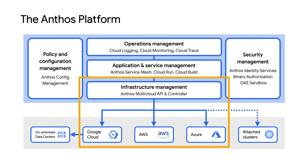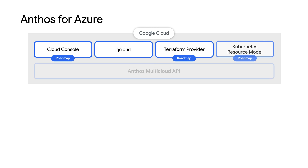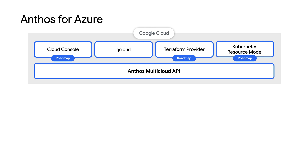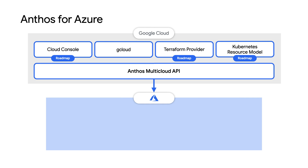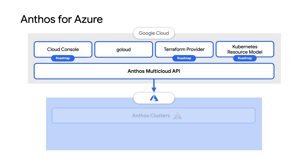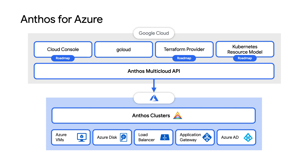Now let's dive a little deeper into Anthos on Azure. When you deploy an Anthos on Azure cluster, you end up running a compliant Kubernetes cluster on Azure native resources. This cluster can be accessed via the Cloud Console, gcloud command line, or kubectl, just like any other Kubernetes cluster. Additionally, as we'll see in the demo later, the cluster will show up alongside clusters provisioned in other environments such as Google Cloud, AWS, or bare metal, inside of the Google Cloud console.